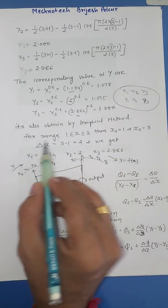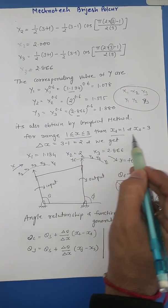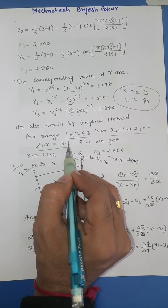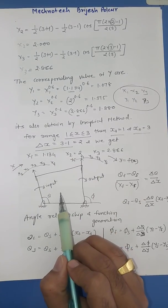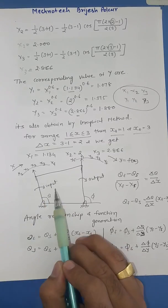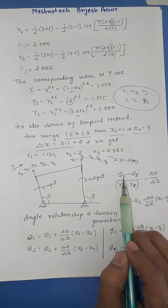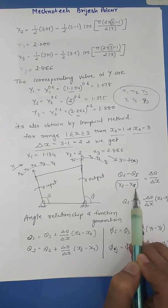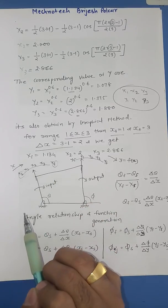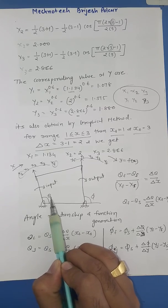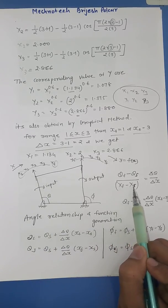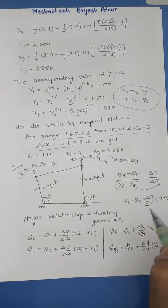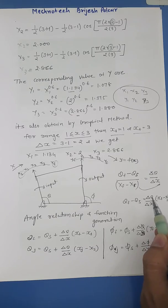This is also obtained by the graphical method. For the range 1 to 3, xs = 1, xf = 3, and delta x = xf − xs = 3 − 1 = 2. By using this figure you can see and understand what I have told you. From the figure we can write: (theta_f − theta_s) / (xf − xs), where f is the finishing position and s is the starting position.